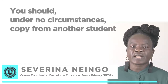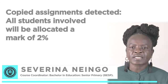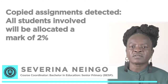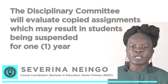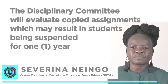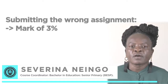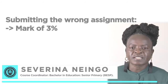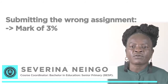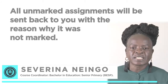You should under no circumstances copy from another student. Should a copied assignment be detected by the tutor, all students involved will be allocated a mark of 2%. The disciplinary committee will evaluate the copied assignment, which may result in students being suspended for one year, which is two consecutive examination sessions. For submitting the wrong assignment, for example the previous year's or another subject's, you will receive a mark of 3%. All unmarked assignments will be sent back to you with the reason why they were not marked.